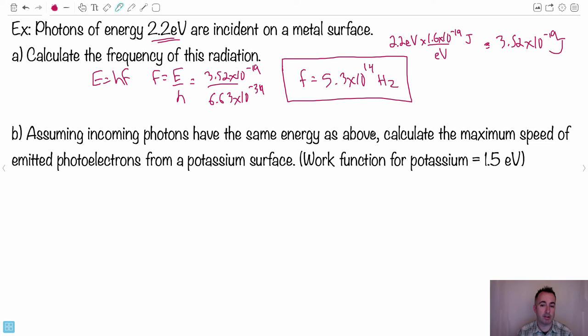Now let's do this one. Assuming the incoming photons have the same energy as above, we're going to assume these photons have the same energy, which could be 2.2 eV or 3.52 times 10 to the minus 19 joules. Either of these numbers will be the same. Find the maximum speed of these emitted photoelectrons. We're this time considering a surface of potassium, which is element symbol K. We're told the work function is 1.5 eV.